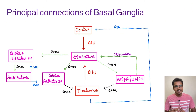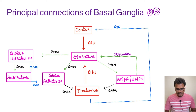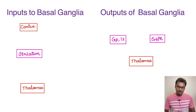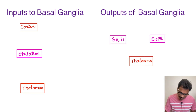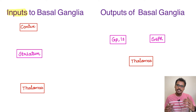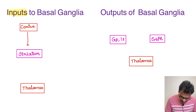Now coming to the connections of basal ganglia, which are very intricate and important. Let us split this diagram and read it in parts before returning to the full picture. The basal ganglia is involved in motor activity and works in association with the cortex and the thalamus. It receives inputs from both structures. Both inputs — from the cortex and from the thalamus — are excitatory inputs producing the neurotransmitter glutamate.